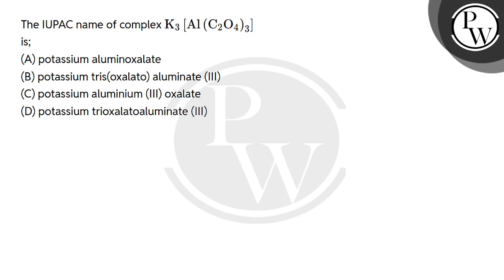So the complex anion is in the form and the counterbalancing cation is potassium. So first the cation name will come, that is potassium.